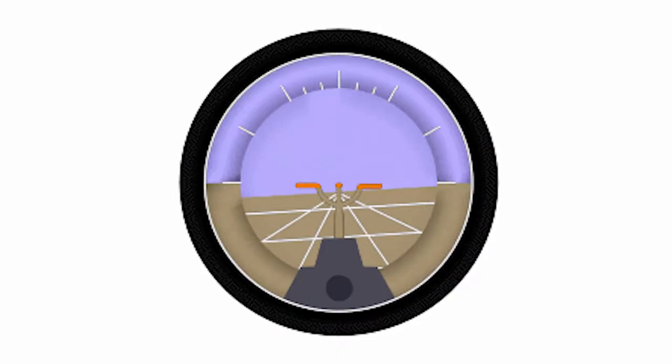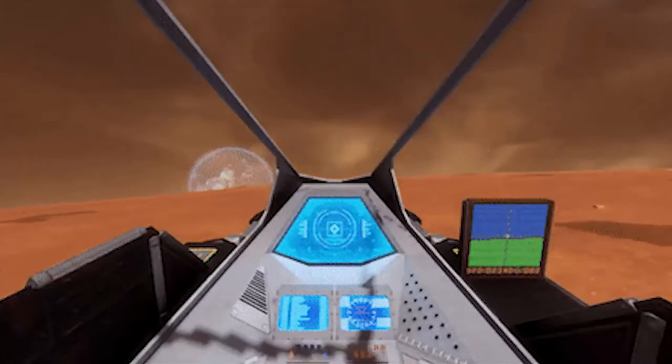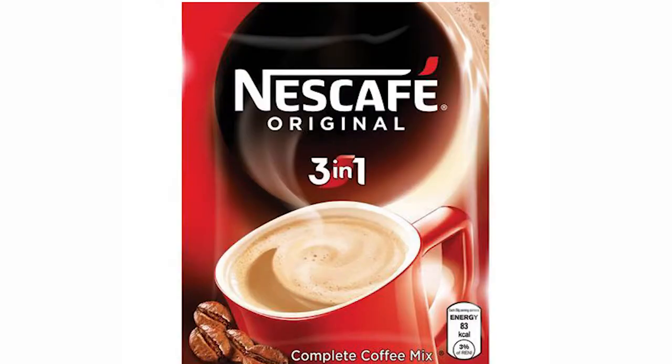So, what is an Attitude Indicator? The Attitude Indicator is a gyro instrument that can inform the pilot its roll, pitch, and bank information. Wow! Three in one! Yummy!